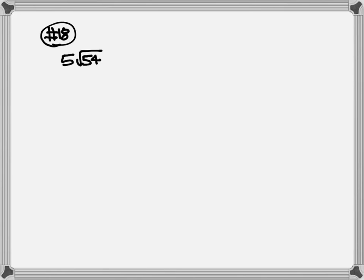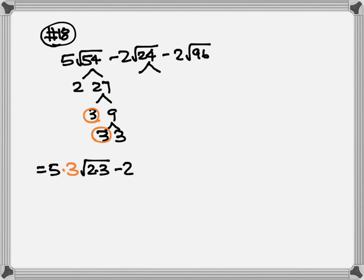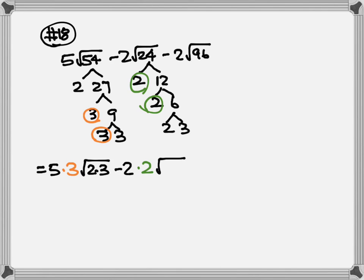Next let's look at number 18. We have 5 square root of 54 minus 2 square root of 24 minus 2 square root of 96. Keep the 5 outside. Let's break down 54: 54 goes to 2 and 27, 27 goes to 3 and 9, 3 and 3. For square root we are looking for a pair — here's my pair of 3, so one 3 goes out, then I have 2 and 3 left so put 2 and 3 inside. Keep the minus 2, break down 24: 24 goes to 2, 12; 2, 6; 2 and 3. Looking for a pair — here's my pair of 2, so one 2 goes out; 2 and 3 are left inside.